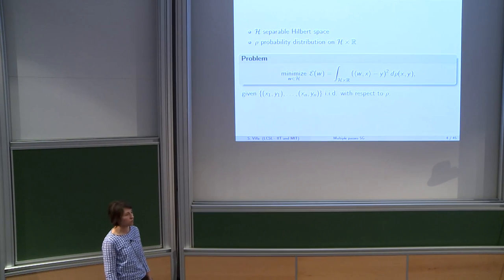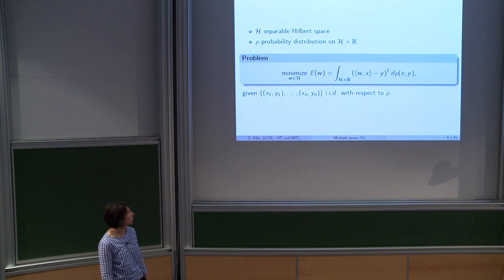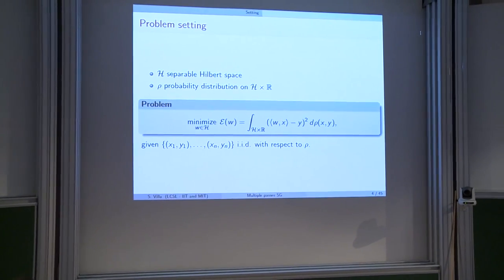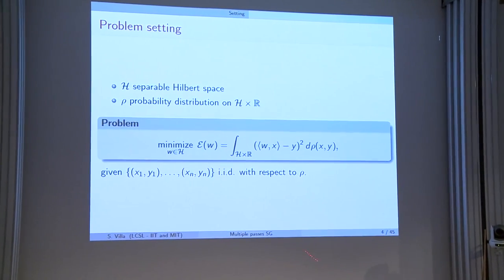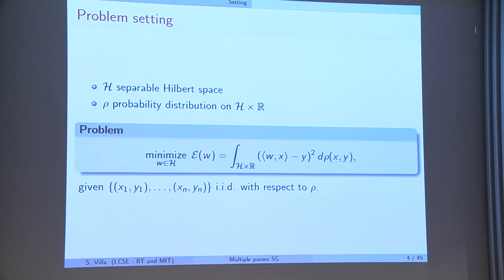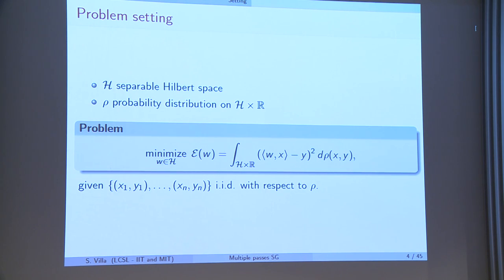The choice of the square loss is critical in our analysis — all that I'm going to say heavily depends on this choice. Square loss plays a crucial role. The objective in learning or stochastic optimization is to minimize a functional E, which can be written as an expectation — in this case, the expectation of a square loss, which depends linearly on w. The problem is that the measure rho is, in general, unknown.